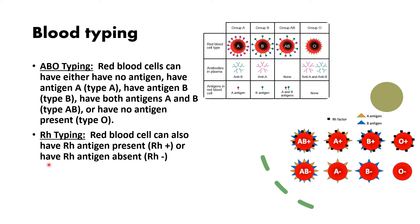In addition to ABO typing, you can have Rh typing. You either have the Rh antigen on the surface or you don't. If it's there, it's Rh positive; if it's absent, it's Rh negative. Typically it's referred to simply as positive or negative — so instead of saying A Rh positive, you just say A positive. A positive has both the Rh factor and A antigen present, while A negative has only the A antigen without the Rh antigen.